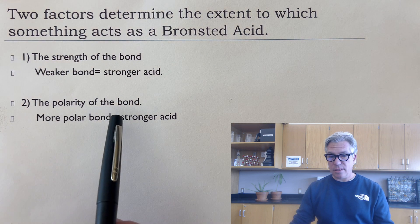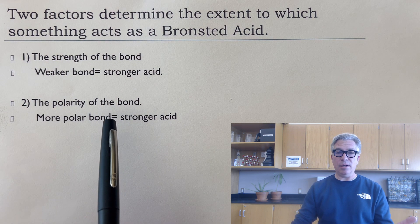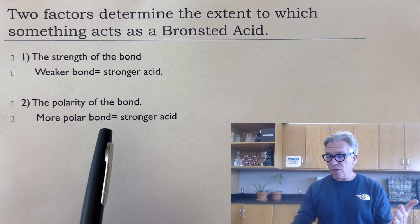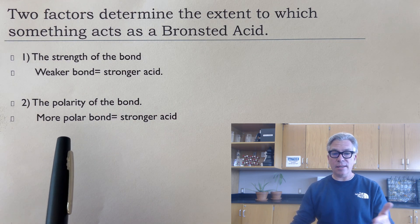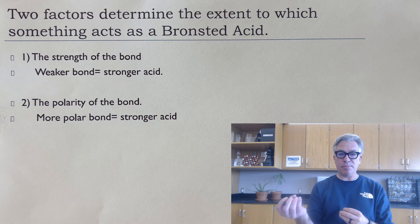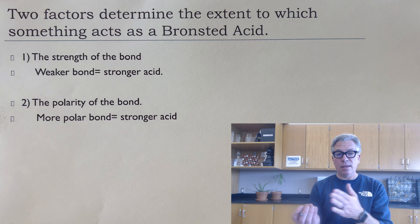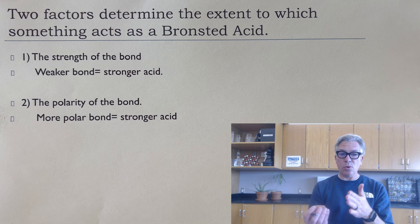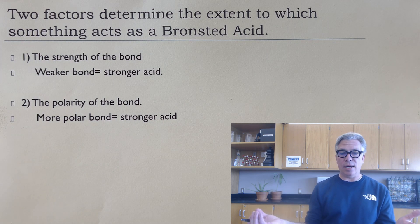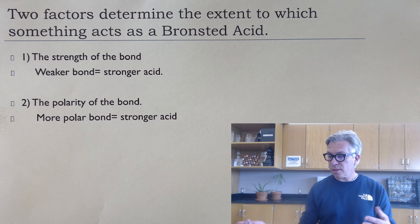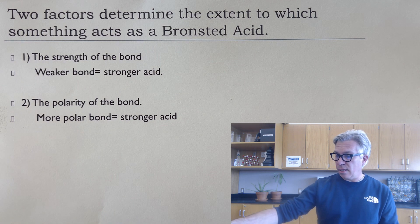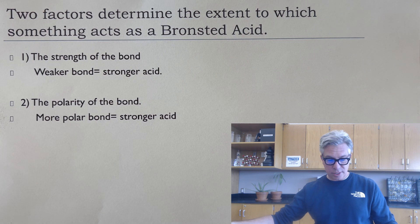Also, the polarity of the bond. How polar is that bond? And in general, the more polar or lopsided it is, that means, you know, the proton is positive. The rest, the other atom is more electronegative. And if there's a big difference there, the electrons get transferred more toward the electronegative atom and the hydrogen pops off. So again, the stronger the acid. So make a note of those two things. We're going to look at some examples here.